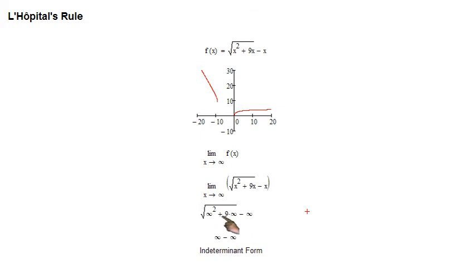Infinity squared plus 9 times infinity minus infinity, a whole bunch of indeterminate forms there. But the main one is this infinity minus infinity. You can't get anywhere with that.